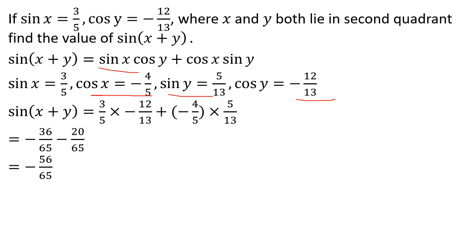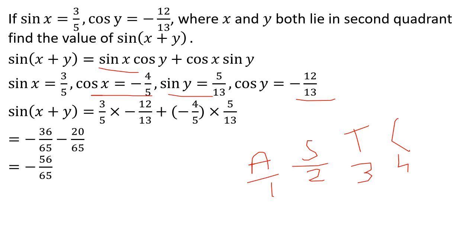All Students Take Coffee: first quadrant — all positive; second quadrant — sin positive; third quadrant — tan positive; fourth quadrant — cos positive. In the second quadrant sin is positive, and our answer is minus 56/65, which makes sense as the result lands outside second quadrant positivity for the combined angle.